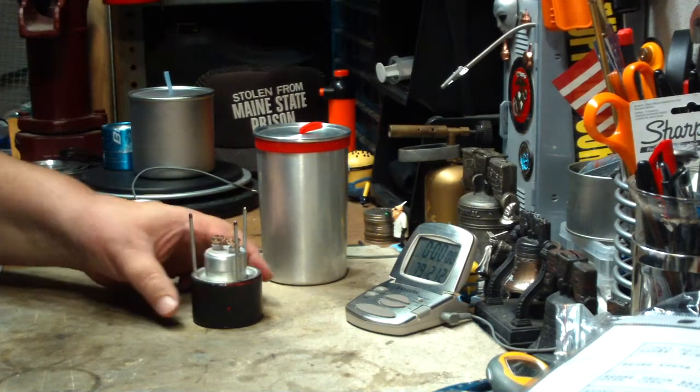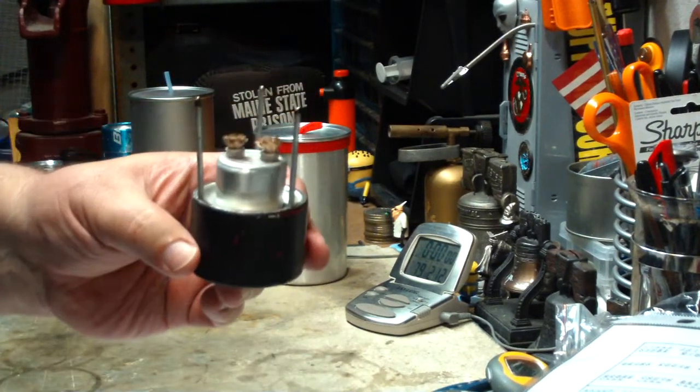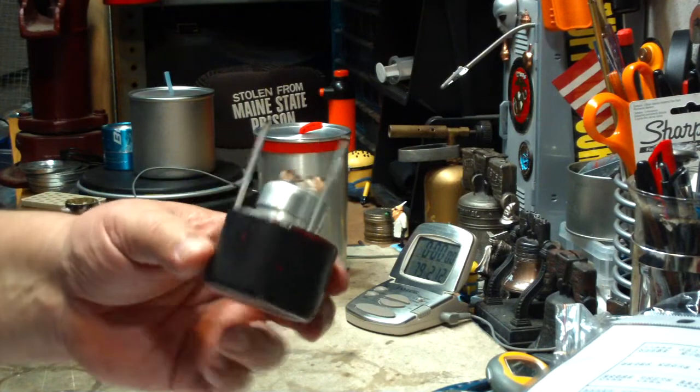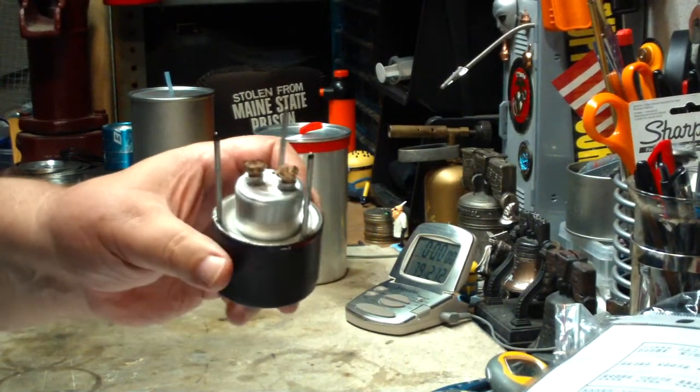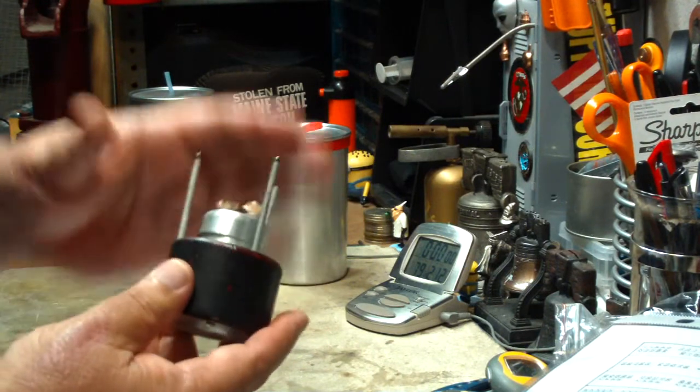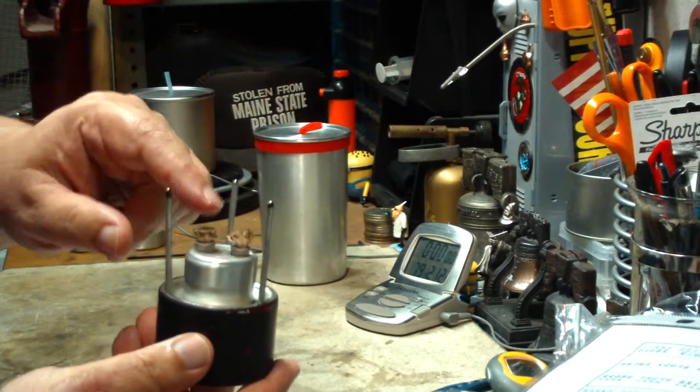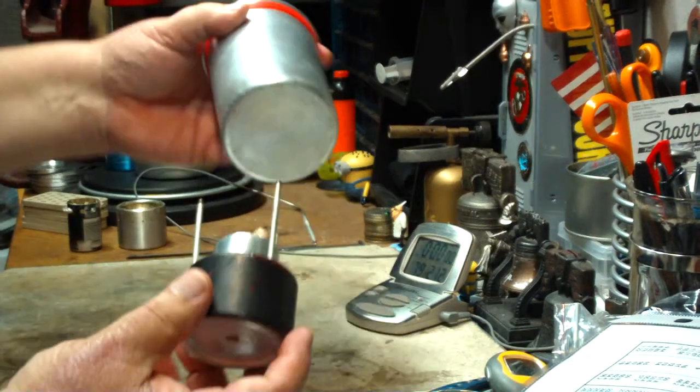But looking through my collection, I remembered this one. It's a wick alcohol stove that I got on eBay some time ago, something like five bucks. This has a stand on it so that the pot will stand right over top of the two wicks that's on here.